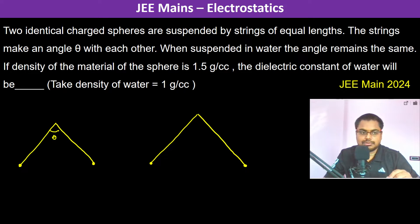The dielectric constant of the water will be... So here this is going to be mg, and it's a sphere. Therefore mg equals rho, which is 1.5 grams per cubic centimeter, into 4 by 3 pi r cubed, times G.